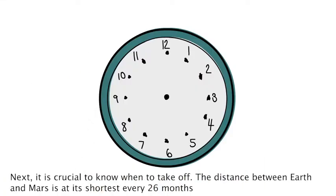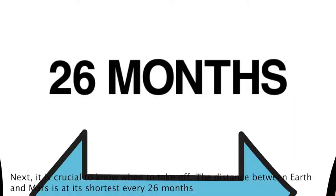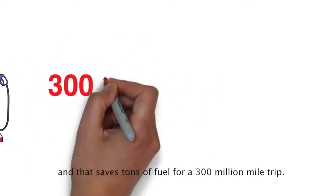Next, it is crucial to know when to take off. The distance between Earth and Mars is at its shortest every 26 months, and that saves tons of fuel for a 300 million mile trip.